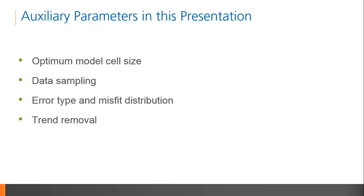Now that we see why auxiliary information is important, I can identify some best practices around key parameters, like model cell size, data sampling, error assignment and type, and trend removal. The aim is to correctly choose these parameters in order to obtain the best inversion result as efficiently as possible.